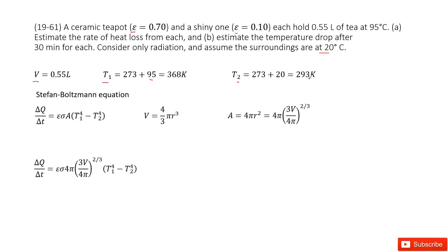The problem asks us to find the rate of heat loss from each. The teapot temperature is higher than the surroundings, so heat flows from the teapot to the surroundings - there's a heat loss. To find the rate of heat loss, we use the Stefan-Boltzmann equation from the textbook.